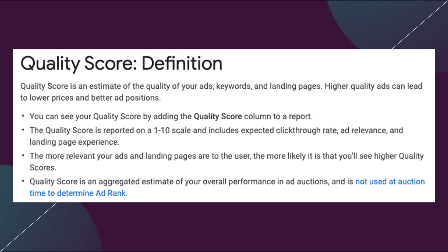Quality Score is reported on a 1 to 10 scale and includes expected click-through rate, ad relevance, and landing page experience — three of the factors that go into Quality Score. The biggest takeaway is that the more relevant your ads and landing pages are to the user, the more likely it is that you'll see higher quality scores. As long as you continue to be relevant, on-topic, and provide a good experience, Google wants to reward that because it's in their best interest.